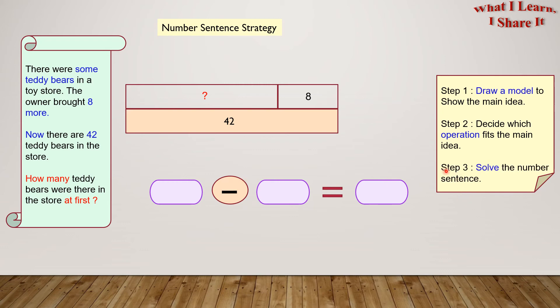Step 3. Solve the number sentence. We can write 42, which came from here and which is a whole, minus 8, which came from here and which is a part of the whole. So 42 minus 8 equals 34.